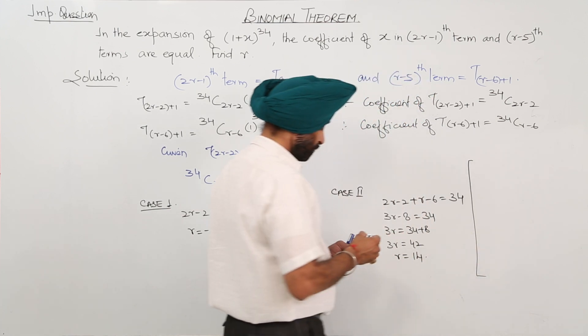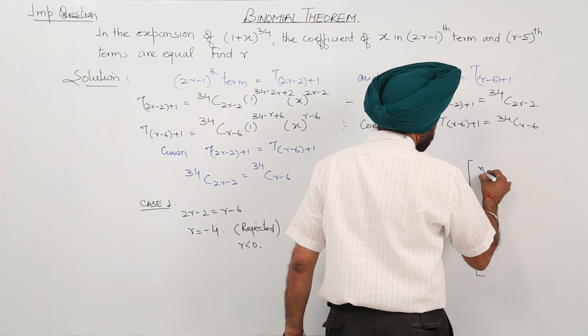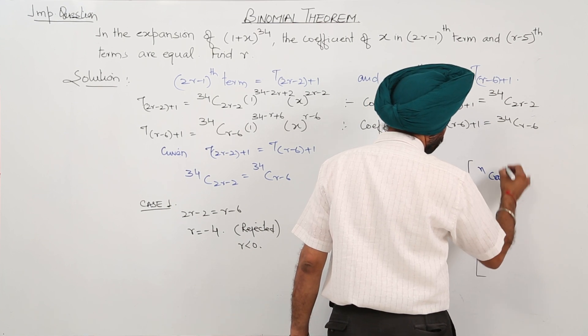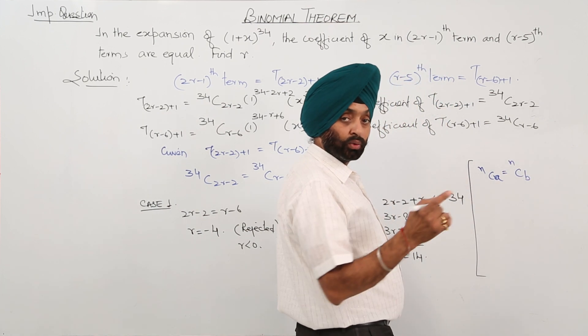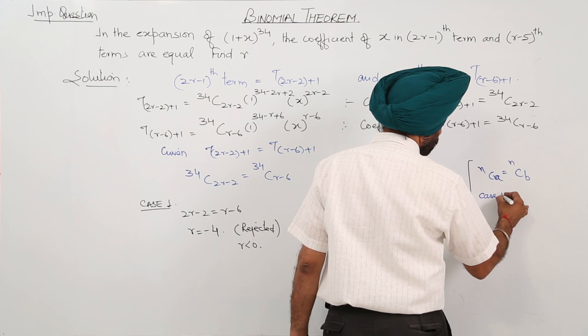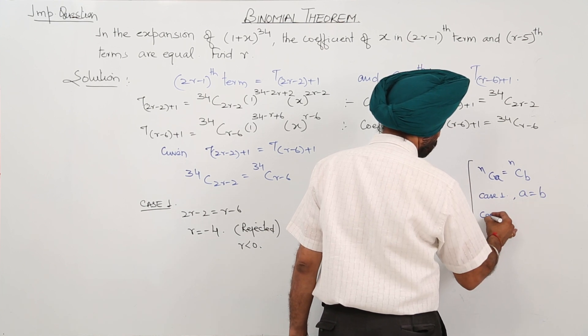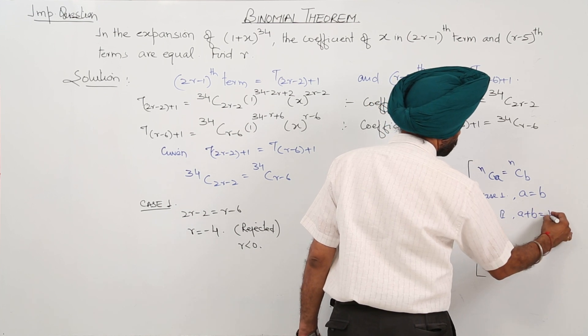What I have used: In the combination form, if nCa equals nCb, then two cases exist. Case 1: a equals b. Case 2: a plus b equals n.